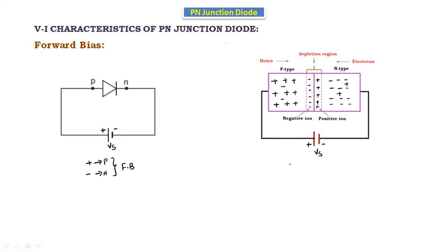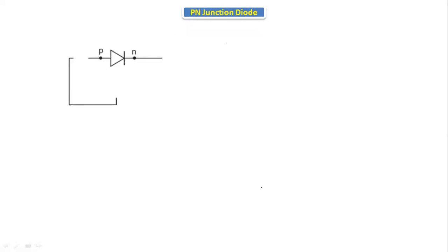When we apply forward bias to the diode, the depletion region width — indicated by Wd — decreases. There is movement of the charge carriers and the diode will be in the ON condition in forward bias.